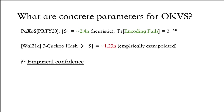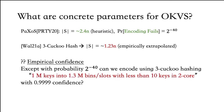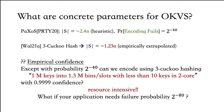However, to have empirical confidence, we would need to verify statements like: except with probability 2⁻⁴⁰, can we encode using cuckoo hashing with three hash functions 1 million keys into 1.3 million bins with less than 10 keys appearing in the two-core with confidence 0.9999? Running experiments to verify something like this is very resource-intensive, and even after investing millions of core-hours, it's not feasible. Further, what if you want to use your OKVS in an application that needs failure probability 2⁻⁸⁰? Certainly you can't experimentally verify this.